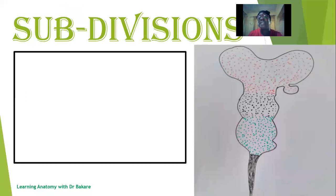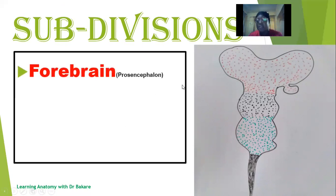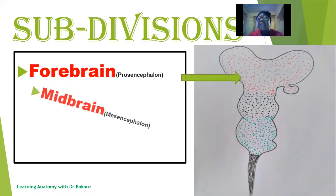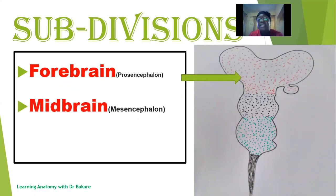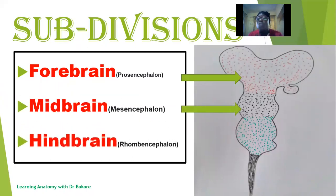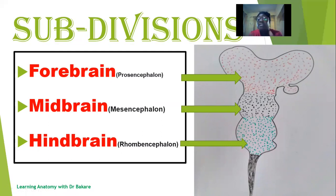The brain can be subdivided into three sub-regions. We have the forebrain, also referred to as the prosencephalon. We have the midbrain, also referred to as the mesencephalon. Then we have the hindbrain, also called the rhombencephalon. These are the primary brain vesicles, and this is where the brain develops from. Within each of these three sub-regions, different structural components of the brain emerge. Let's see what each of these subdivisions — the prosencephalon, the mesencephalon, and the rhombencephalon — develop to become.